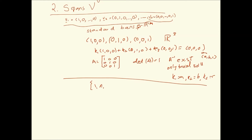The standard basis for the polynomial space PN consists of vectors P0 = 1, P1 = x, all the way up to PN = x^N. The linear combinations of P0 through PN give you any vector in the polynomial space PN, so this is the standard basis for PN.